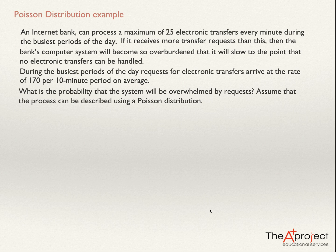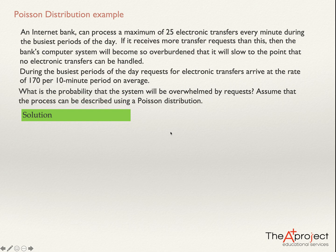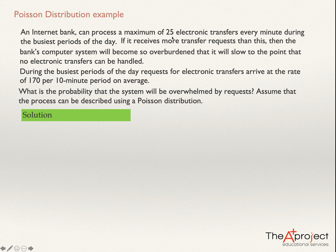Let's find a solution to this problem. First of all, even if I don't get the information that this can be described using a Poisson distribution, I'm going to understand that the Poisson distribution will be a good model for a problem like this. First of all, this is a discrete random variable — the number of electronic transfers that this bank can process. The number could be 24, 25, 26, 20, etc.